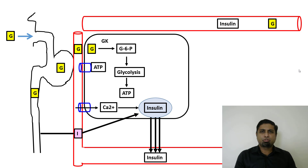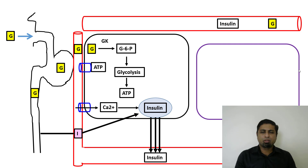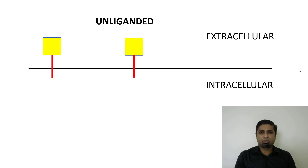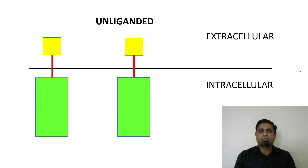It is the job of insulin to ensure that glucose moves from the plasma into the cells which require glucose for ATP generation. This is achieved by the binding of insulin to its receptors. The receptor for insulin is an example of RTKs, or receptor tyrosine kinases. These are receptors with an extracellular domain, a transmembrane domain, and an intracellular domain, and they exist as dimers.